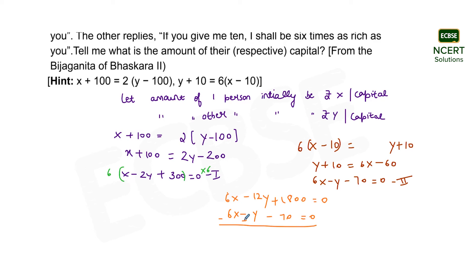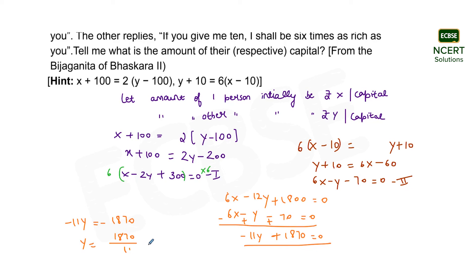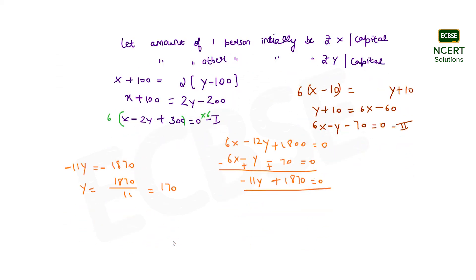Subtracting the second equation from the first (altering the sign and adding), I get: −11y + 1870 = 0, so −11y = −1870, giving y = 1870 ÷ 11 = 170. Substituting y = 170 into the first equation: x − 2(170) + 300 = 0, which gives x = 40.